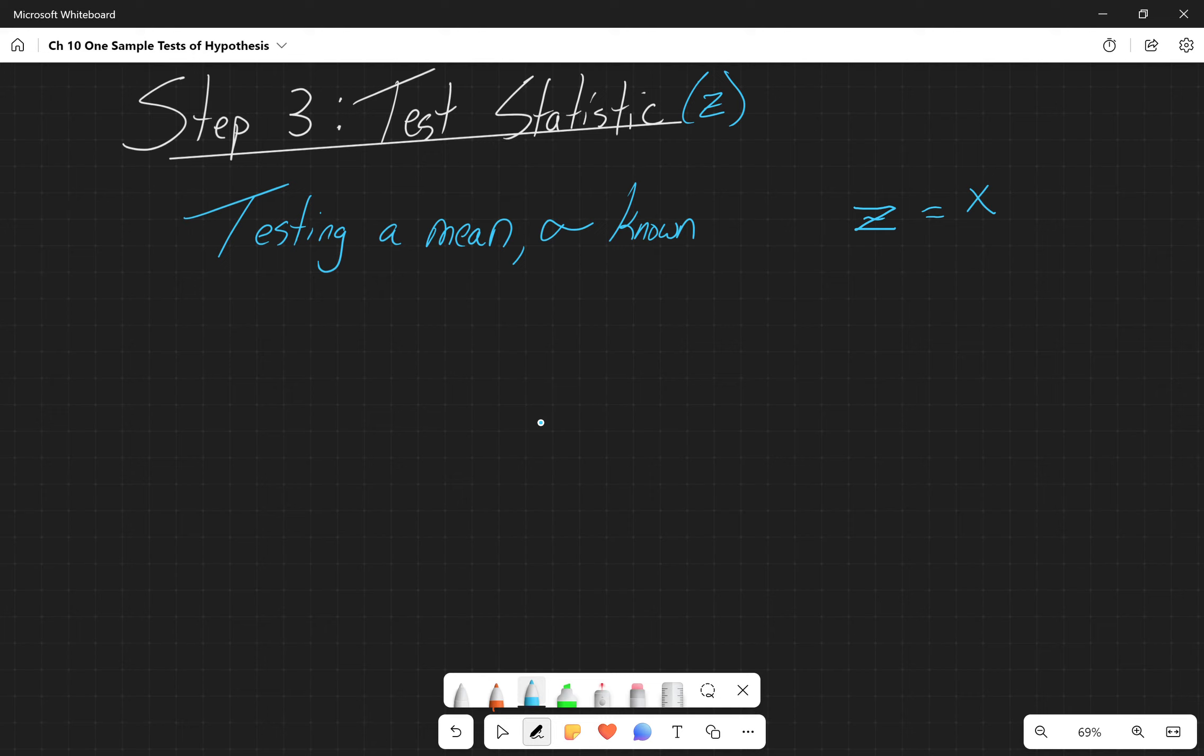So that is equal to x bar, so this is the average for the sample, minus the hypothesized mean, mu. And then we're going to divide this whole thing by the known standard deviation divided by the square root of the sample size. So this is the sample mean. This is the population mean. This is usually the H naught. This is the population standard deviation. And this is the sample size.